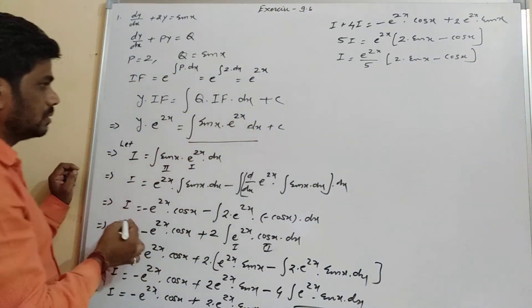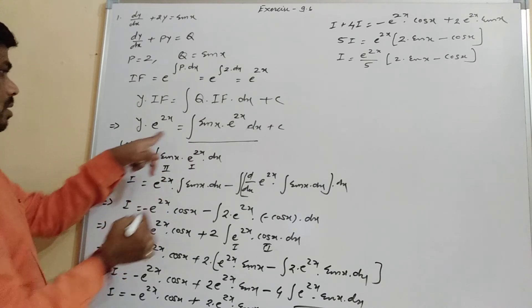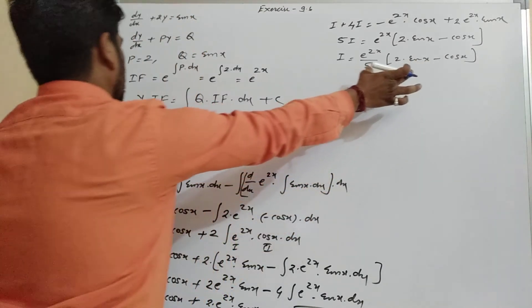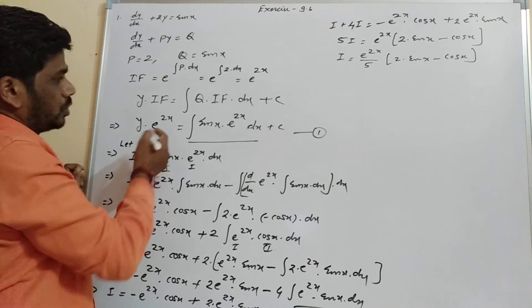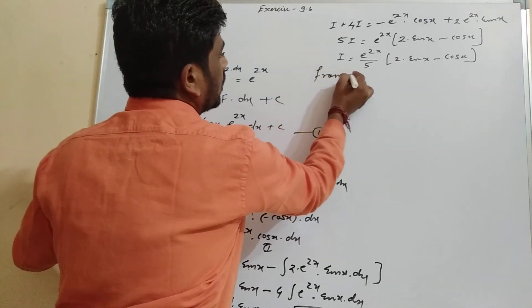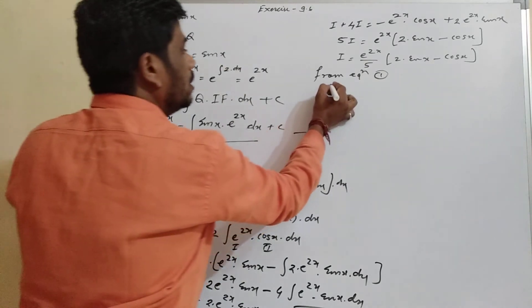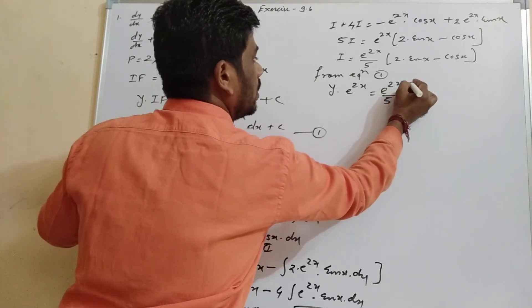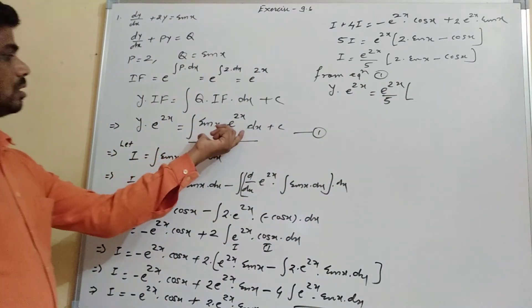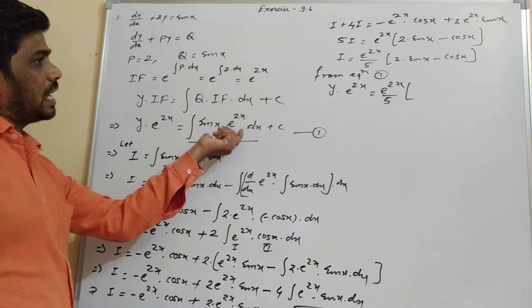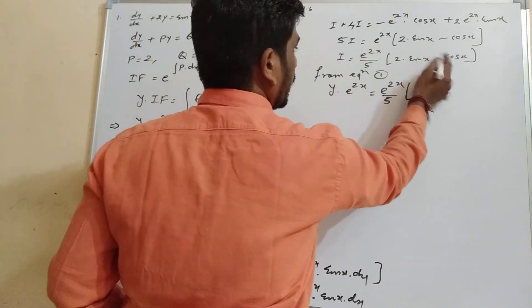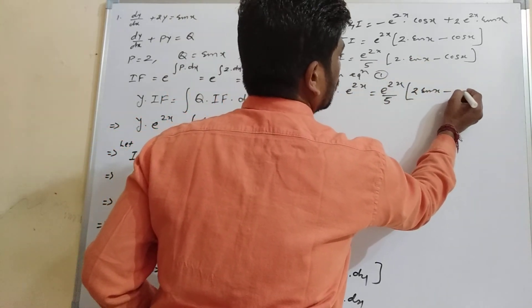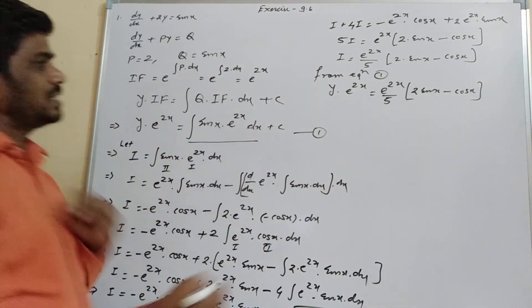This is equation 1. Substituting the value of I back in equation 1, we get y into e raised to power 2x equal to e raised to power 2x upon 5 into (2 sin x minus cos x) plus c.